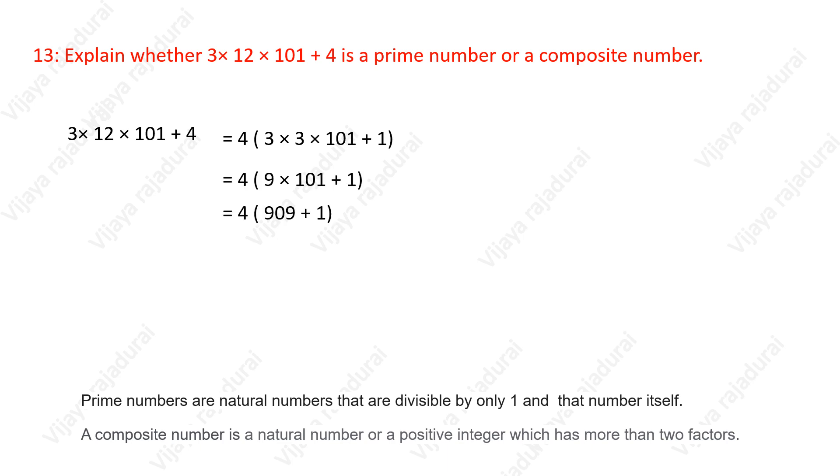Simplifying this value, we get 4×910. This expression is a product of two numbers, which means it has more than two factors.